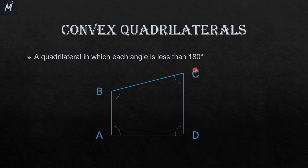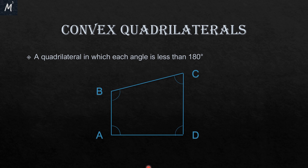Convex quadrilateral. A convex quadrilateral is one in which each angle is less than 180 degrees. Every angle — whether it's A, B, C, or D — is less than 180 degrees. In that case, that type of quadrilateral is called a convex quadrilateral.